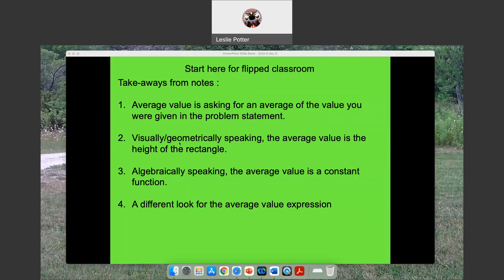Now these next three points, this is where I don't want you to think about it too deeply. Visually, the average value is a height of a rectangle. It's the top of a rectangle. Algebraically speaking, if it's the top of the rectangle, it means it's a horizontal line. Algebraically, that means it's a constant function. Does that make sense? Because constant functions are horizontal, right? They don't change. The values don't change.